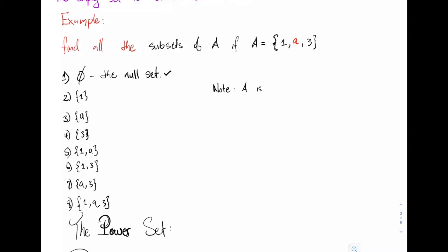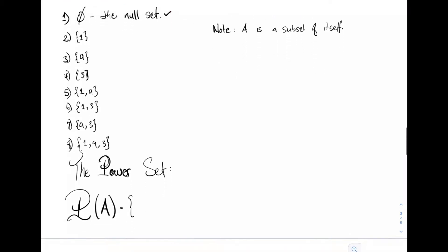A is a subset of itself. Whenever we're writing down subsets, I recommend we always start with the null set and work our way progressively until we get to the same set.